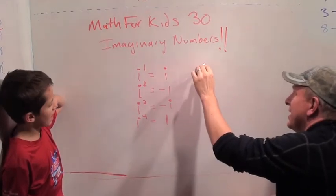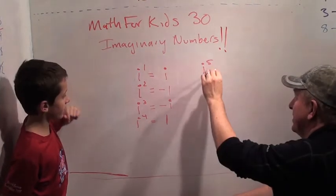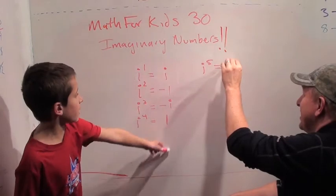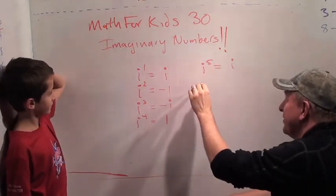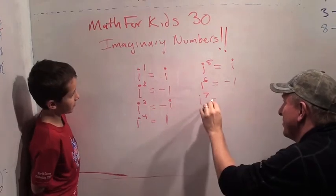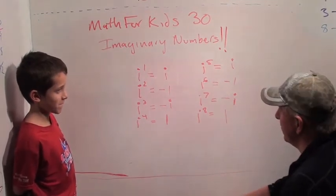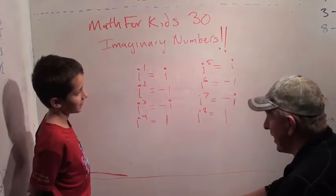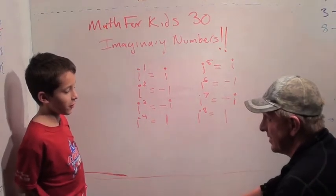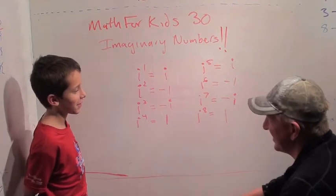Maybe I to the eighth power is one also. What do you think I to the fifth is? It's I to the fourth times I, which is one times I, which is just I. Repeat! I to the fifth is just I. I to the sixth is minus one. I to the seventh is minus I. And I to the eighth equals one. That means I to the twelfth is one, I to the sixteenth is one, I to the twenty-fourth is one. I to any multiple of four equals one — I to the eightieth, I to the four thousandth, I to the four trillionth, I to the four Googolplex.